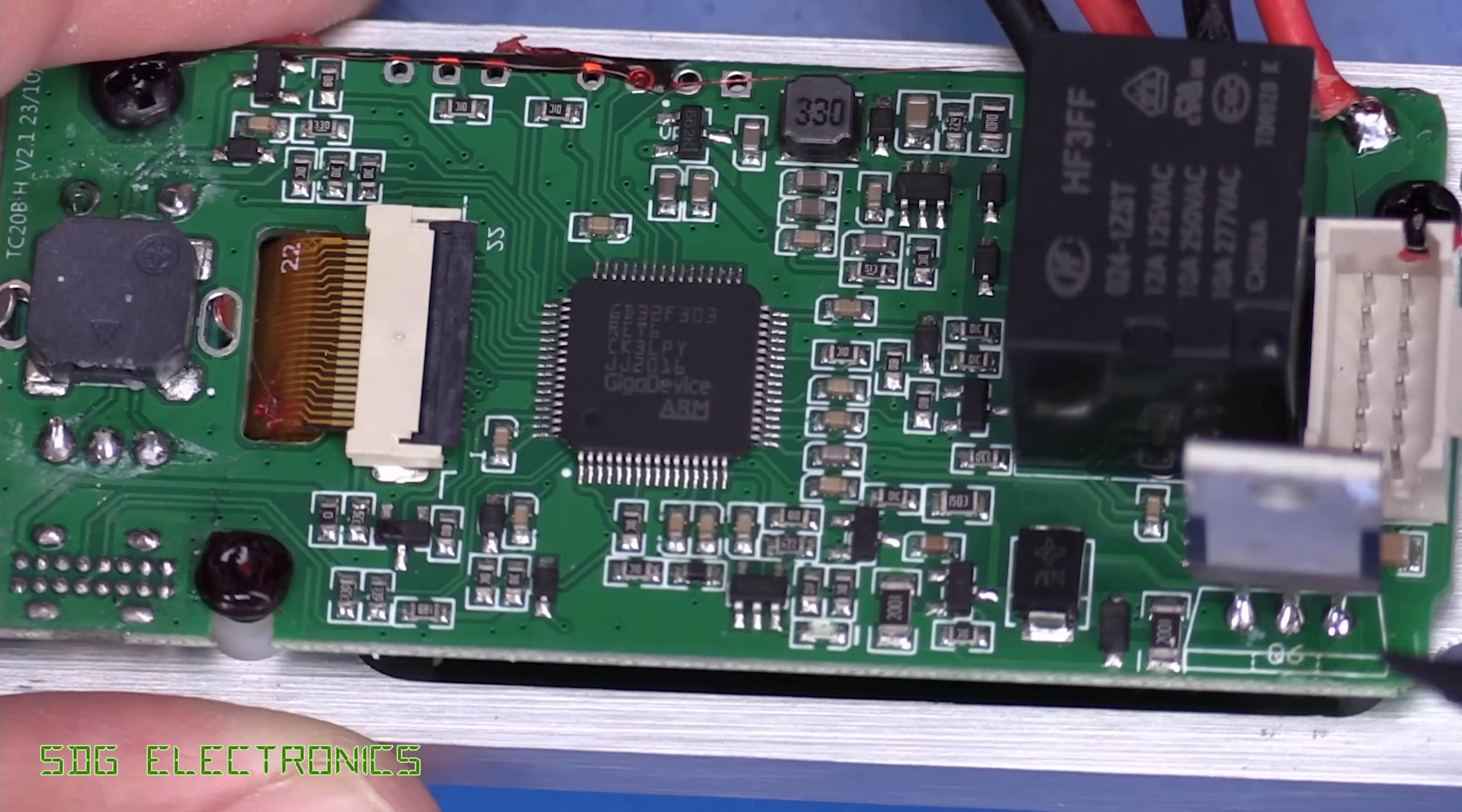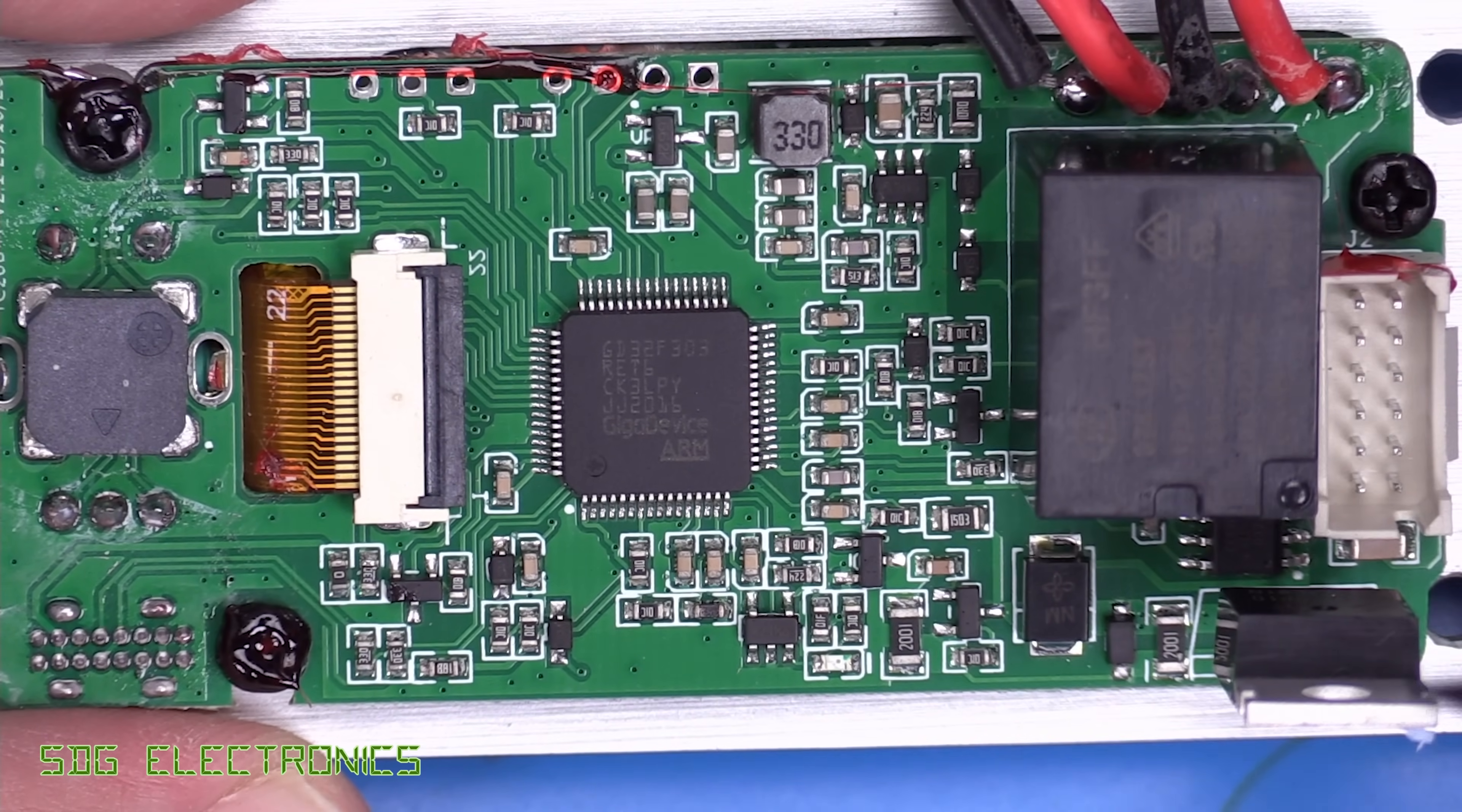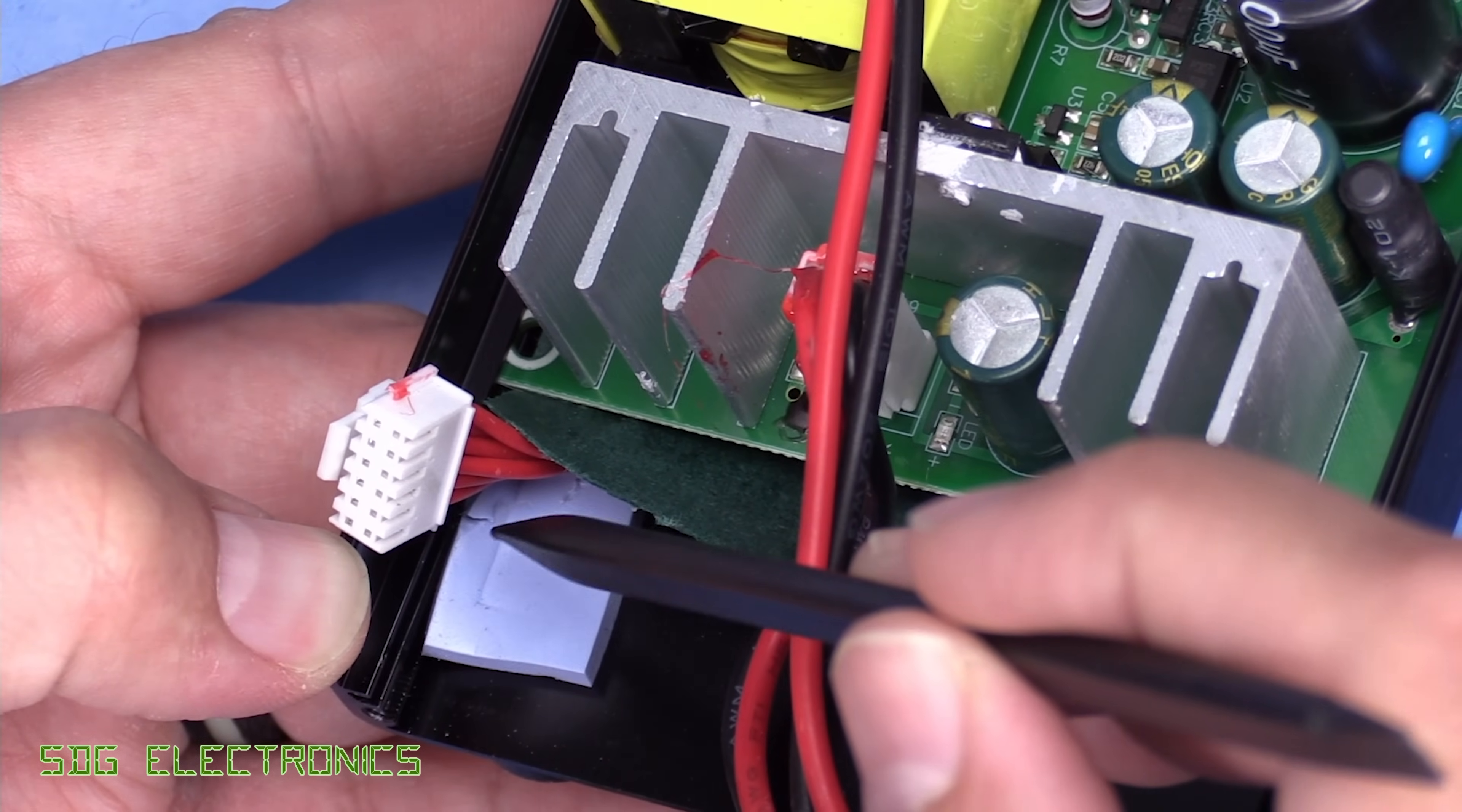Now this one does actually have a little heatsink pad, you can see a little bit of blue on the back of the TO220 package. There's a little pad which sits on the chassis, although there's no actual bolt holding this down in place, it's just providing a little bit of extra heat sinking.